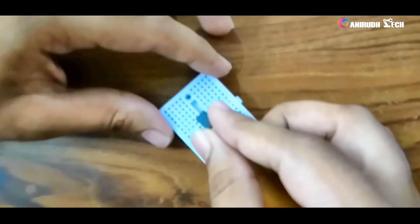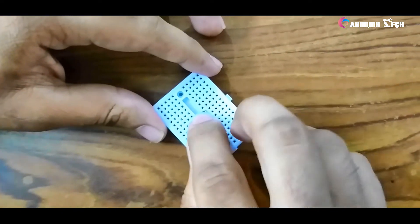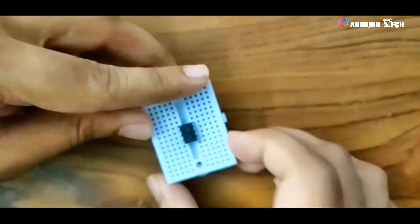First of all, we can place our 555 IC. I am placing it in the center of our breadboard.